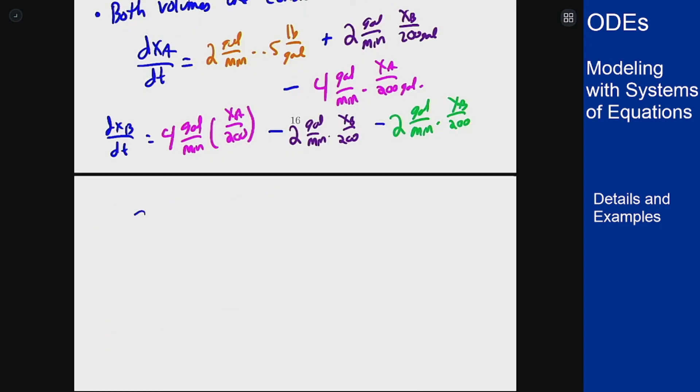We will get that dXA/dt = 1 pound per minute plus XB/100 minus XA/50, simplifying out these two terms here. And dXB/dt equals XA/50 minus XB/50 because I will have 2 plus 2 gets me 4 of these which is XB/50. And there is my system for this problem.